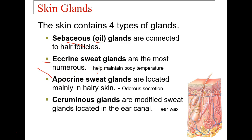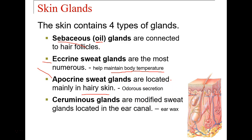Eccrine sweat glands are the glands we think of normally when we think of sweating. If we're out in 110-degree weather just walking around and sweat is collecting on our arms and face, those are eccrine sweat glands helping to maintain body temperature by cooling the body down. Apocrine sweat glands, on the other hand, are more in the hairy parts of the skin — think of your underarms. They create an odorous secretion because of the cellular material they secrete; bacteria feed off that material and create the gas we smell.